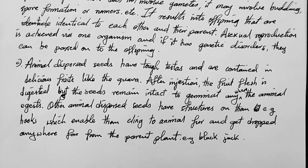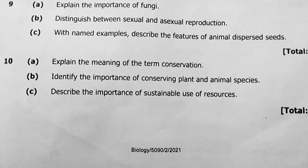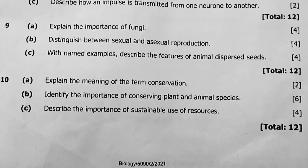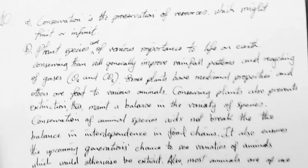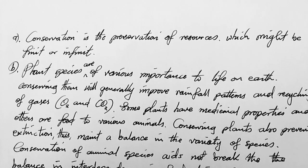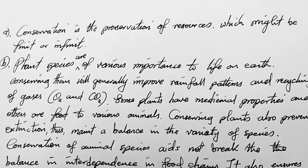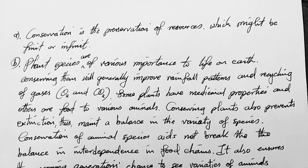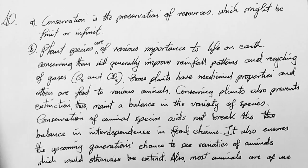Finally, question 10: explain the meaning of the term conservation. Conservation is the preservation of resources, which might be finite or infinite. Finite means they can finish; infinite means they cannot really finish — for example, a large river like the Zambezi or the Amazon may not dry up, but you still need to conserve it because you can contaminate it. To conserve is to preserve.